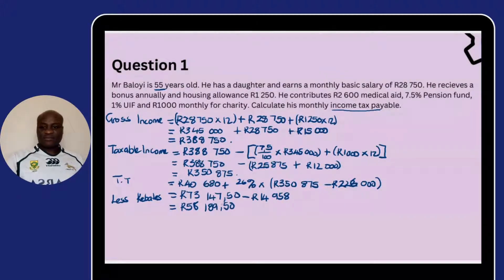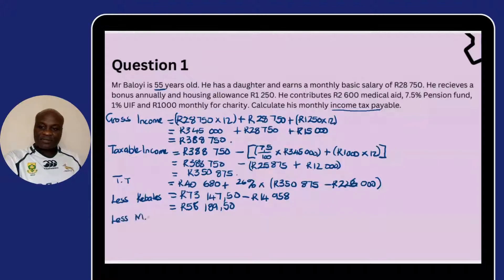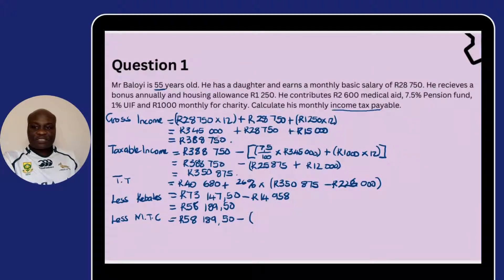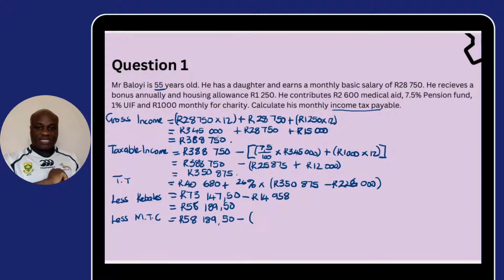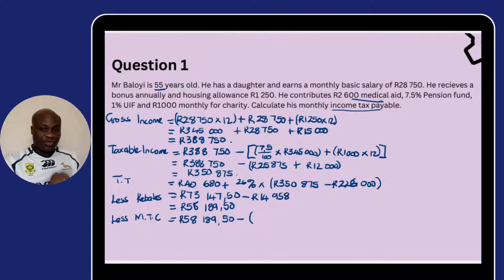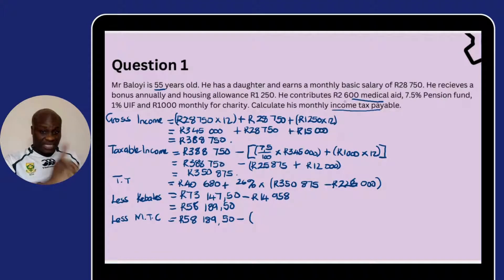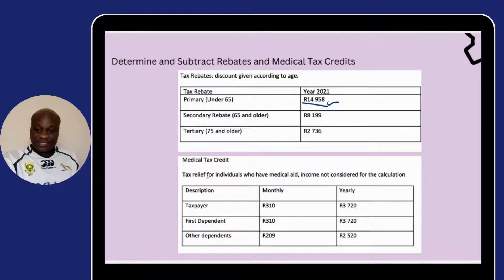We are done with the rebates. The next thing to subtract is the medical tax credits. We take the same amount of R58,189.50 and subtract the medical tax credits. How many people are here? Remember, it's Mr. Baloy and his daughter — they are two: the taxpayer and the first dependent. We are told he is a contributor to medical aid. If the question is silent about a contribution to medical aid, you cannot calculate medical tax credits. Also, we do not use the medical aid contribution amount directly — we go to the medical aid tax credit table.